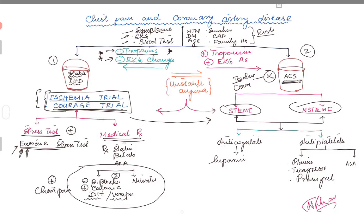What's really most important is once these patients are categorized into ACS, you have to basically do two things: you have to anticoagulate them and you have to give them antiplatelets.